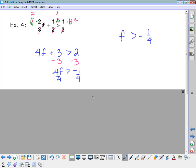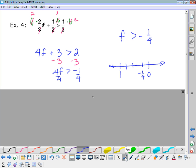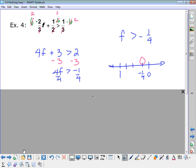So f is greater than negative 1 fourth. Okay, I divide it by a positive 4. So that's why I didn't flip the symbol around. And then 0, 1. So negative 1 fourth would be right there. And this one's going to be open or closed? Open circle. Left or right? Going to the right.